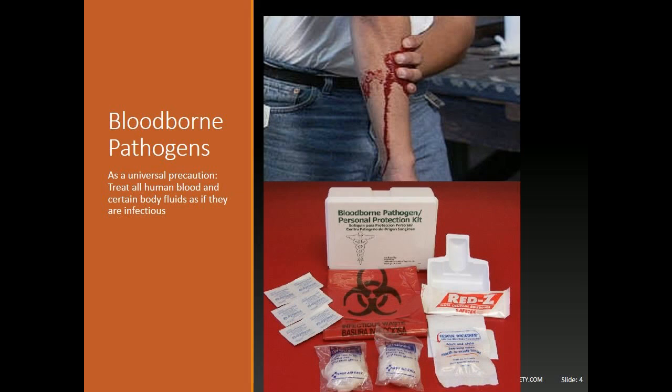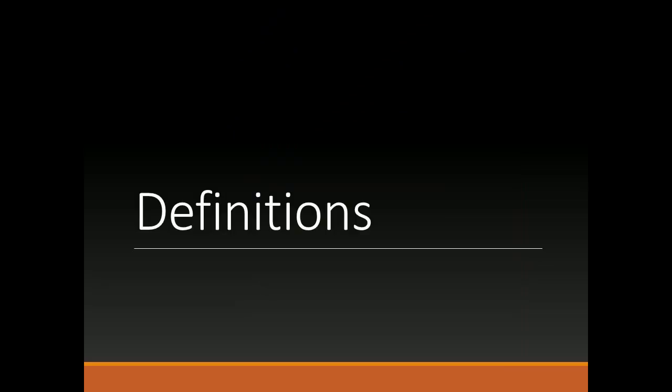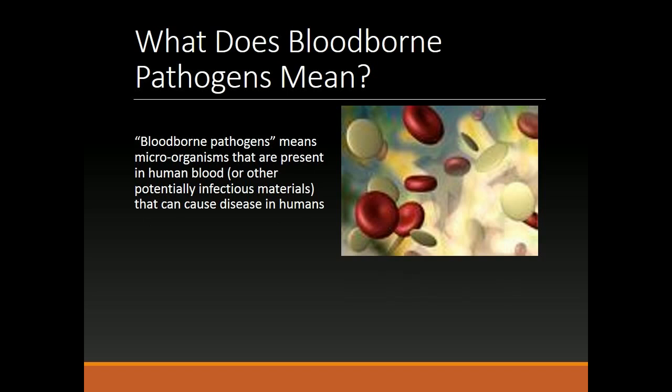Bloodborne Pathogens. As a universal precaution, treat all human blood and certain body fluids as if they are infectious. Bloodborne pathogens means microorganisms that are present in human blood or other potentially infectious materials that can cause disease in humans.